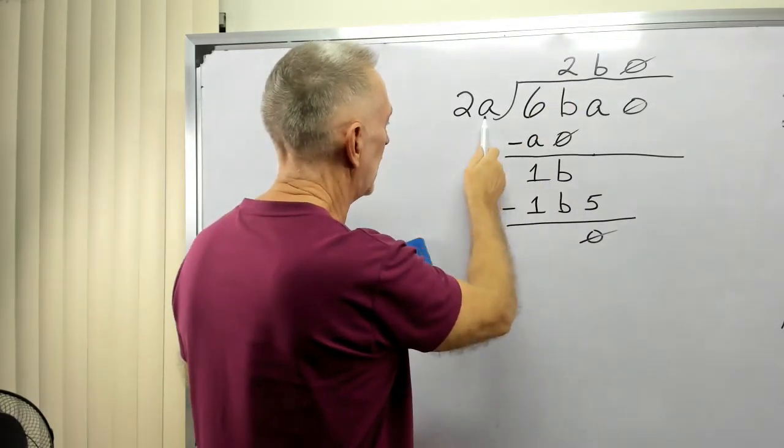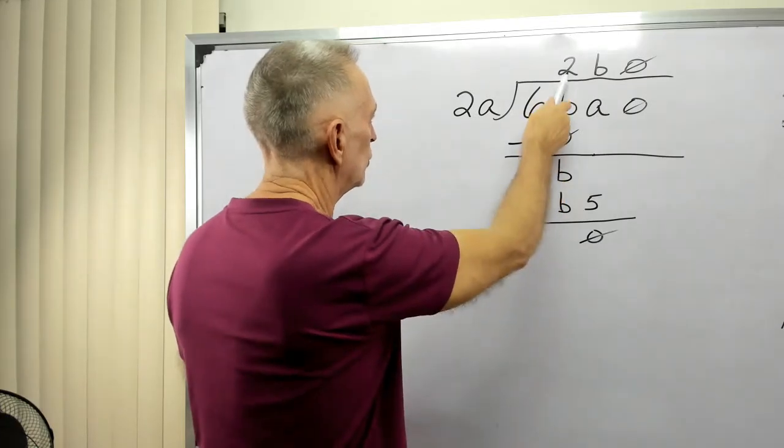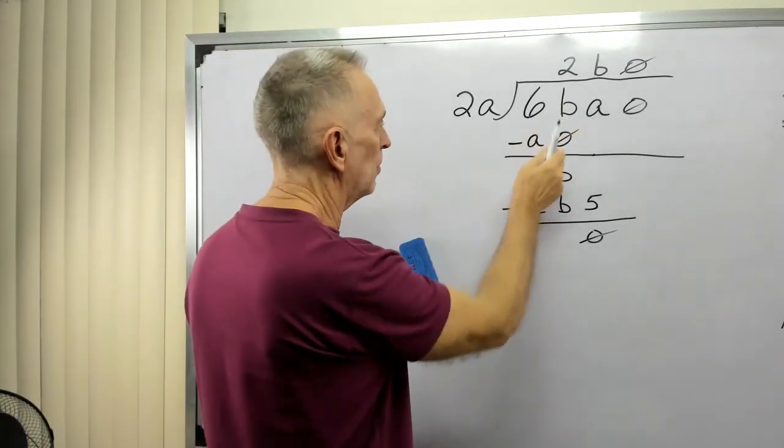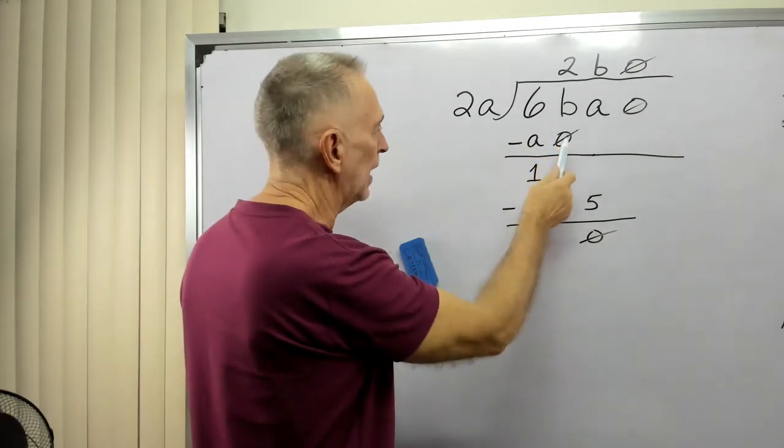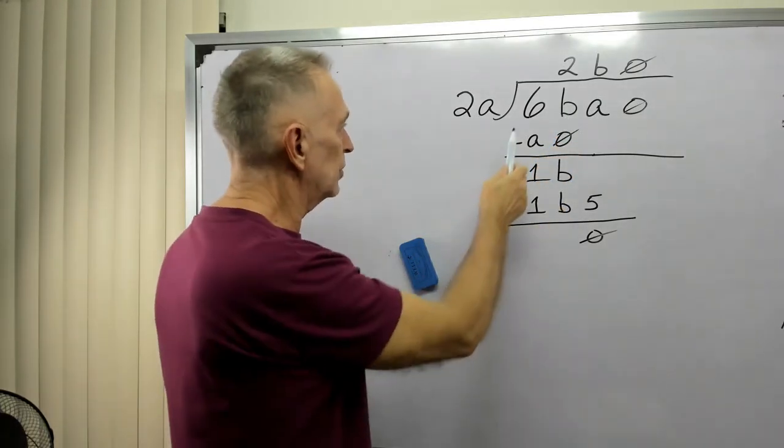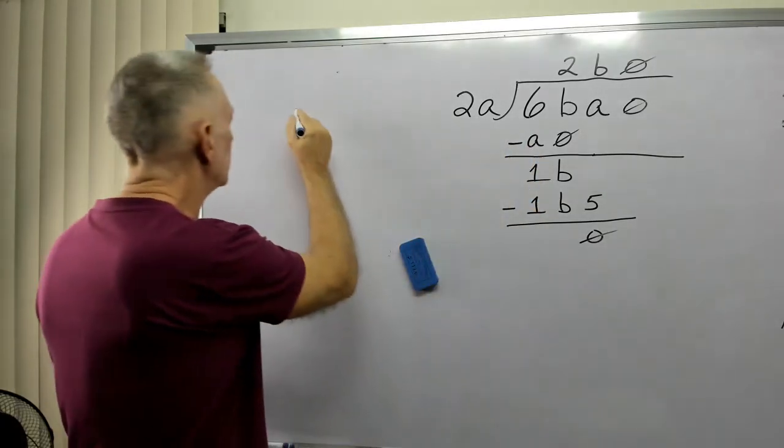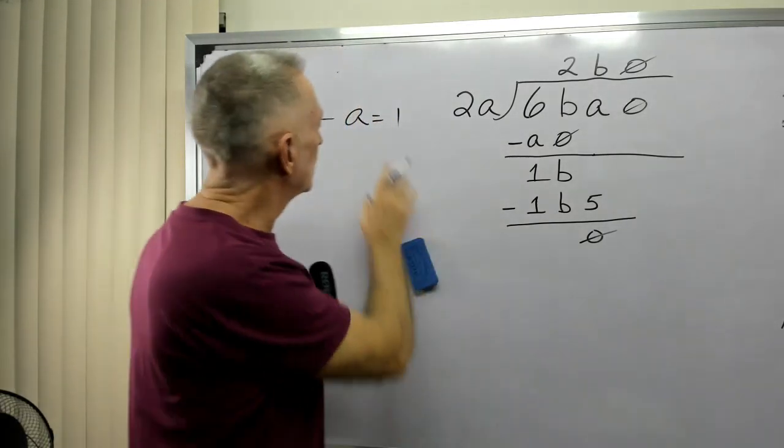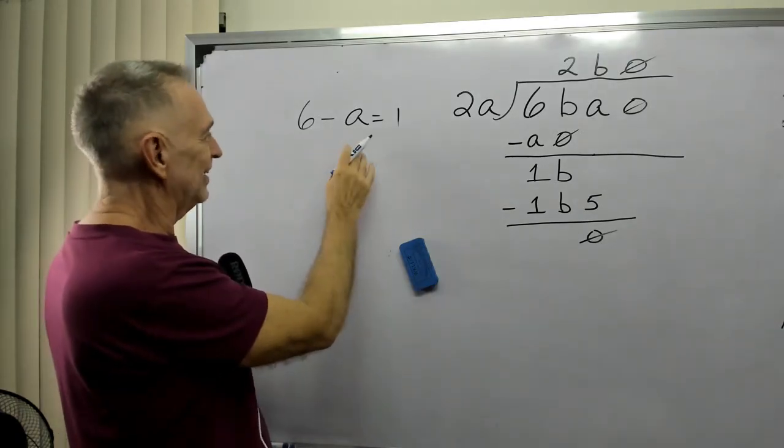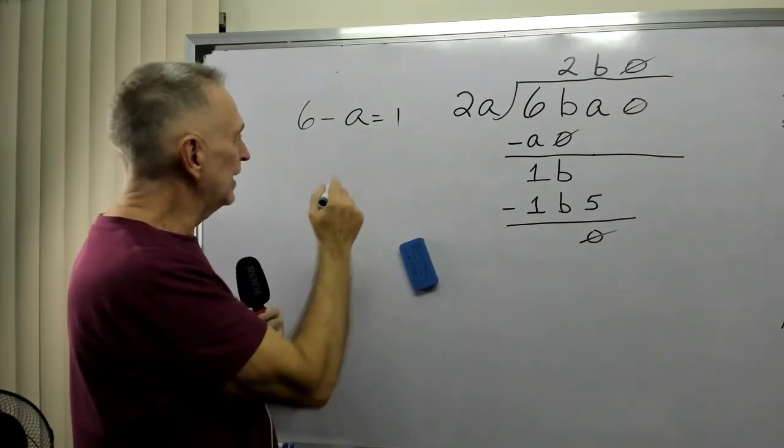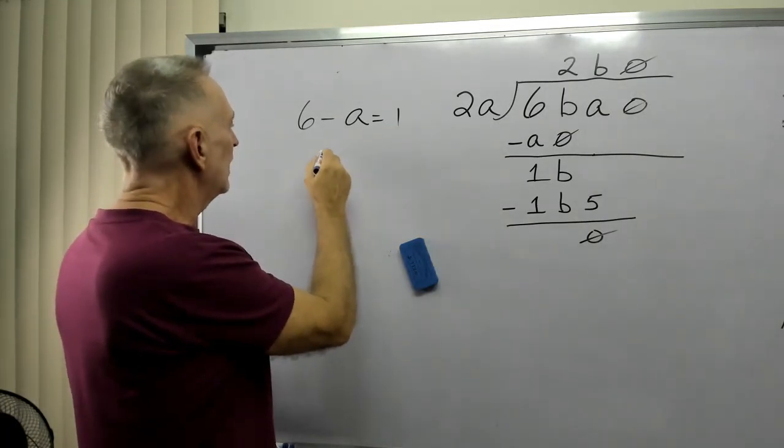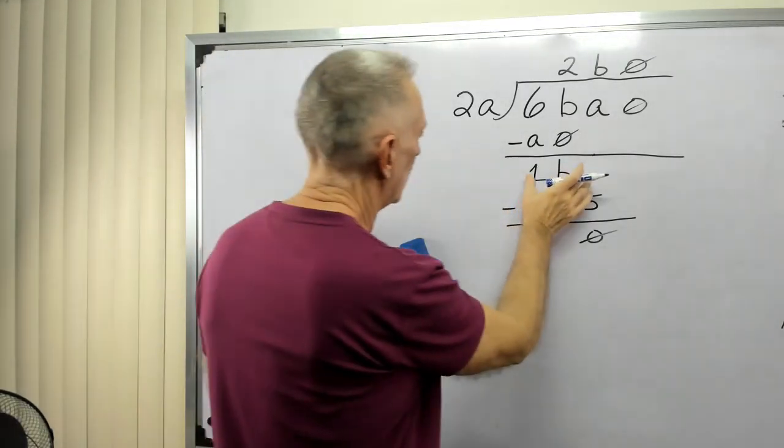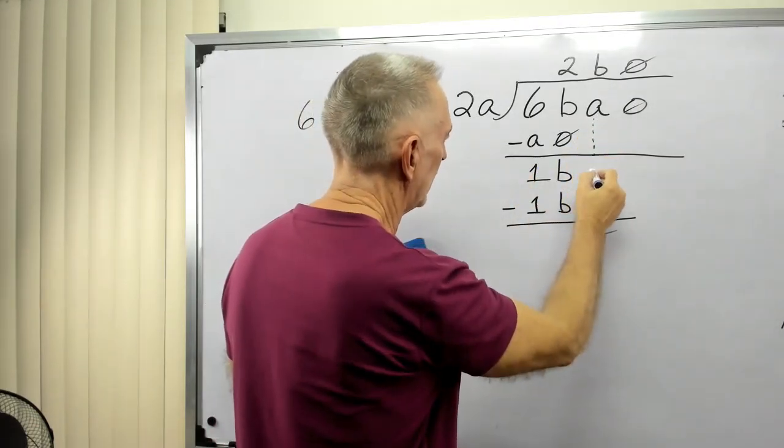I have 2 times A gives me 0. 2 times 2 gives me A. Now if we were working this problem, what would we do now? B minus 0 equals B. Well, that makes sense. 6 minus A equals 1. That would indicate that 6 minus 5 equals 1. It makes you think that A equals 5, but let's keep going. We ended up with 1B. We would bring down the A.